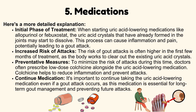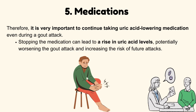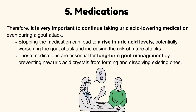To minimize the risk of attacks during this time, doctors often prescribe low-dose colchicine alongside the uric acid-lowering medication to reduce inflammation. It's important to continue taking the uric acid-lowering medication even if a gout attack occurs, as stopping it can lead to a rise in uric acid levels, potentially worsening the attack and increasing the risk of future attacks. These medications are essential for long-term gout management by preventing new crystals from forming and dissolving existing ones.